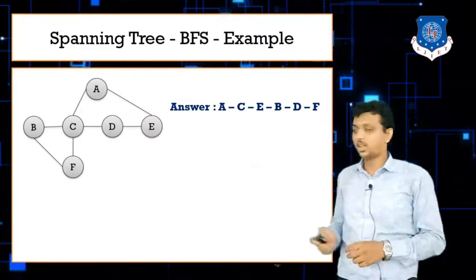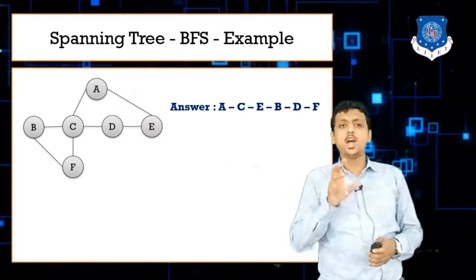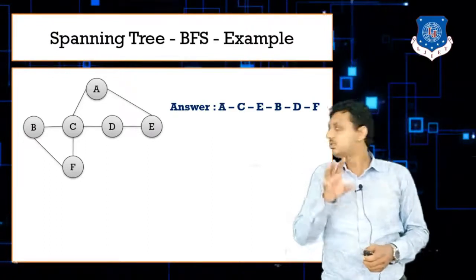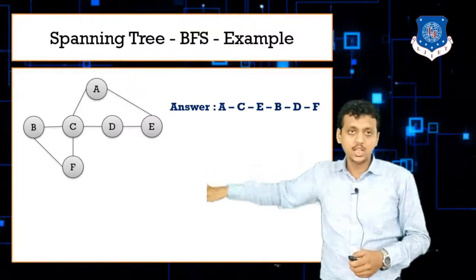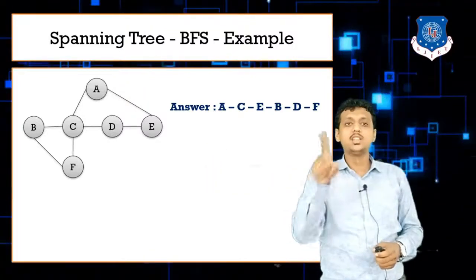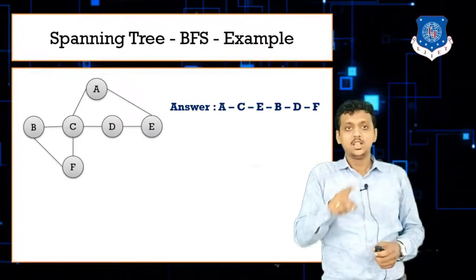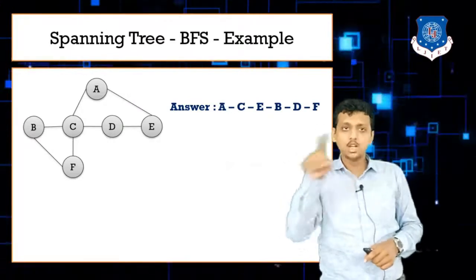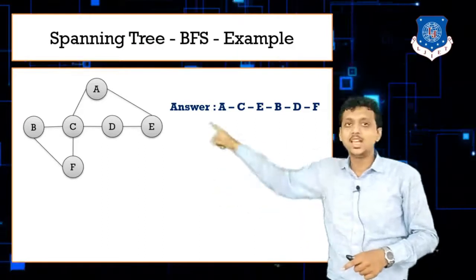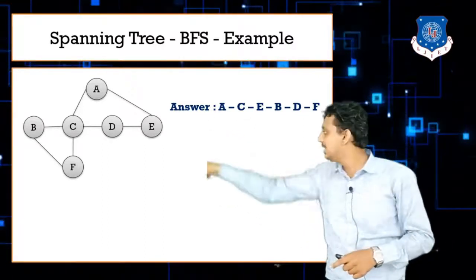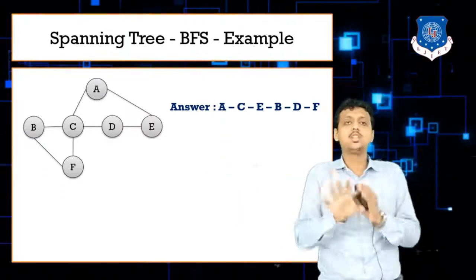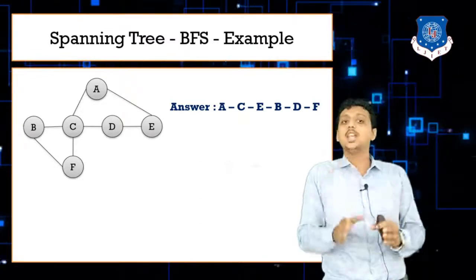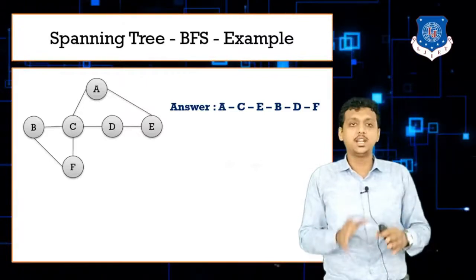Now let's talk about the spanning tree before making one from BFS and DFS traversal. A spanning tree is not cyclic — all nodes are connected with each other but never form a cycle. A cycle means a closed path, such as A-C-D-E-A or B-C-F-B. There is no closed path in a spanning tree, and all nodes are connected with each other.